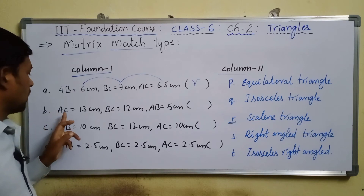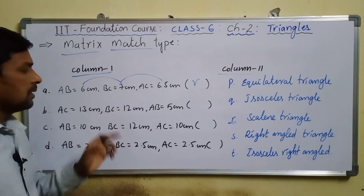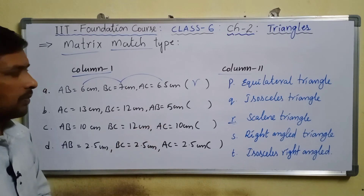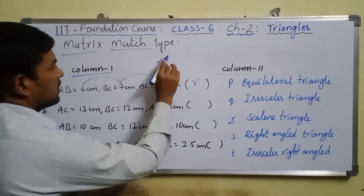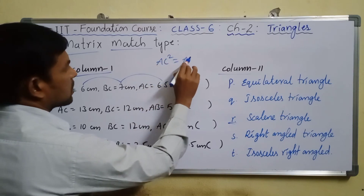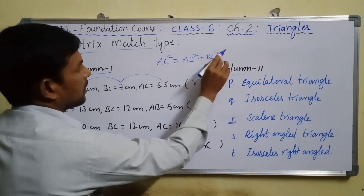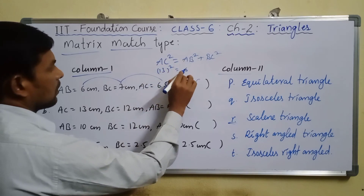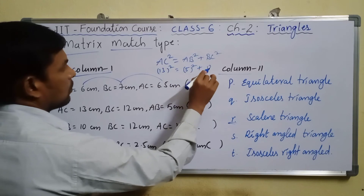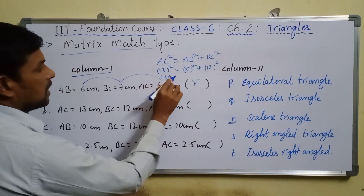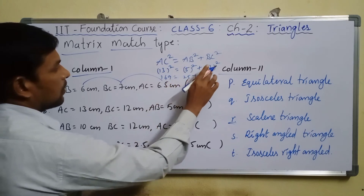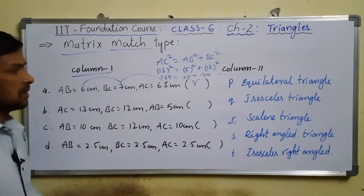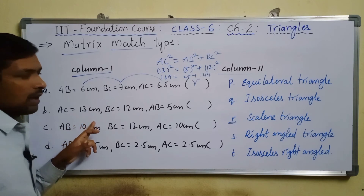Item B: AC = 13 cm, BC = 12 cm, AB = 5 cm. Checking Pythagorean theorem: AC² = AB² + BC², that is 13² = 5² + 12², giving 169 = 25 + 144 = 169. This confirms a right angle triangle, matching option S.